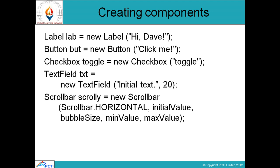For example, we create a label with some text, then buttons, then a checkbox using a toggle, then a text field with initial text and a size of 20 characters, then a scroll bar - a horizontal scroll bar - with an initial value, bubble size, minimum value, and maximum value. So we can set different values for the scroll bar.